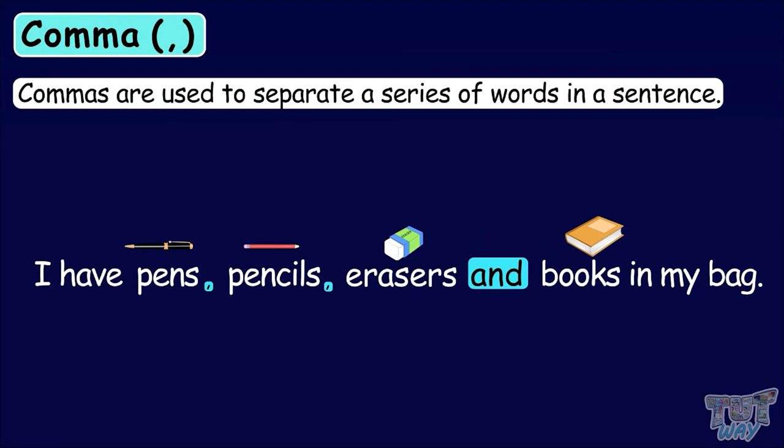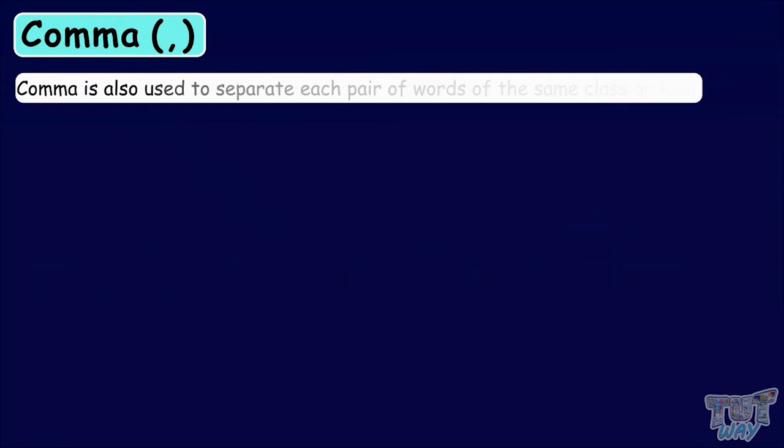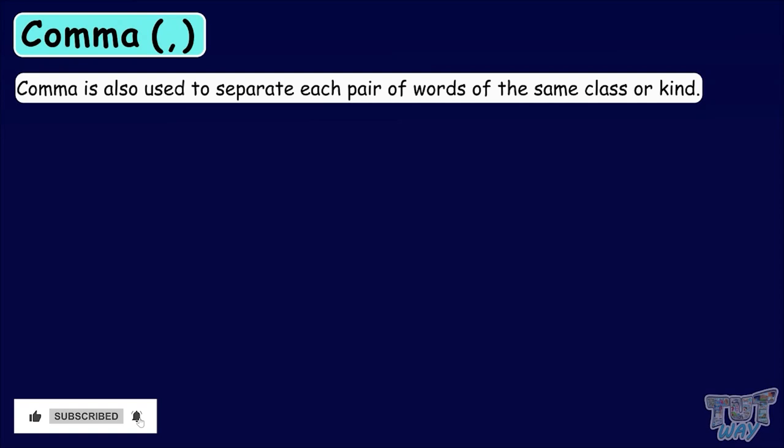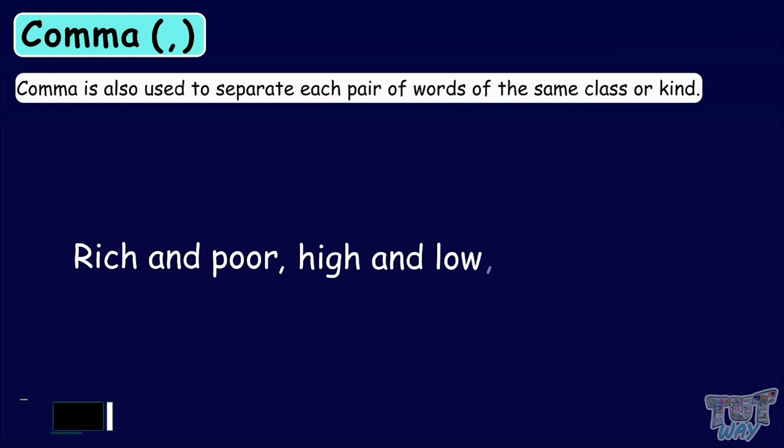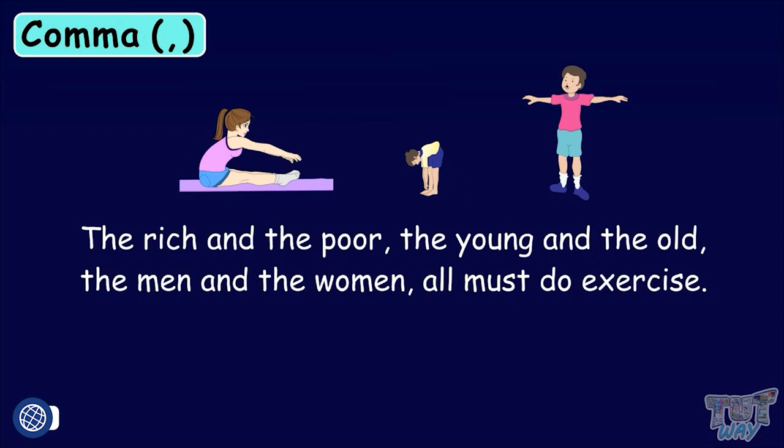Comma is also used to separate each pair of words of the same class or kind, like rich and poor, comma high and low, comma young and old. Let's learn this with the help of an example. The rich and the poor, the young and the old, the men and the women, all must do exercise. Here we have separated each pair of words of the same class with commas.